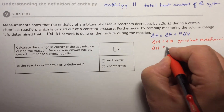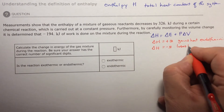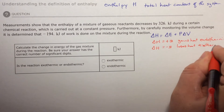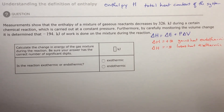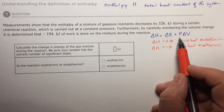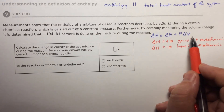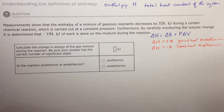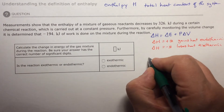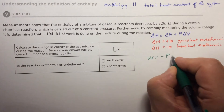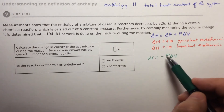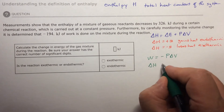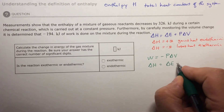Conversely, if it loses heat and delta H is a negative number, it's called exothermic. Looking back at the formula, this should trigger something in your memory about pressure and the change of volume. We've seen that work is equal to the negative pressure times the change in volume. That means change in enthalpy is equal to the change in energy minus work.